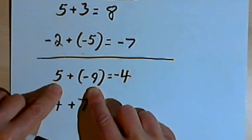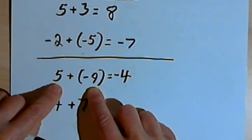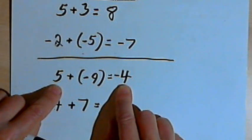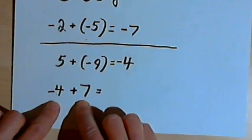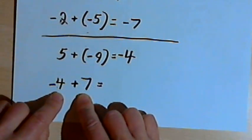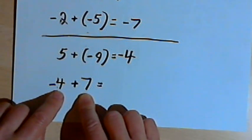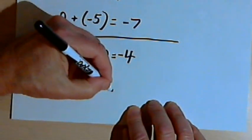Once again, if the signs are different, take the difference of the two numbers disregarding their signs, and then look at the two numbers — whichever number was bigger, use the sign that that number had for your answer. Here's another one: negative 4 plus 7. The signs are different, so I'm going to take the difference of 4 and 7, which is 3. Now 7 is bigger than 4 and 7 is positive, so my answer will be positive 3.